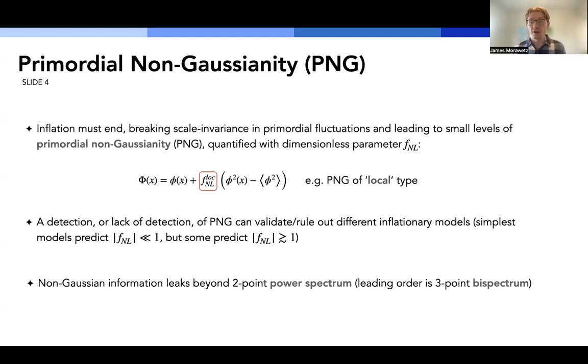So one of the characteristics of inflation is that we know that it must end at some point. And typically, we make approximations of, for example, scale invariance in the primordial fluctuations that are generated during inflation, which should obey Gaussian statistics. But because of the fact that inflation does eventually have to end, this breaks the assumption of scale invariance and can lead to small levels of deviation from Gaussian initial conditions known as primordial non-Gaussianity. And we typically quantify this with the dimensionless parameter FNL.